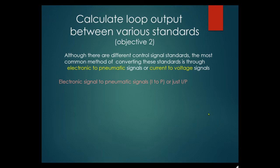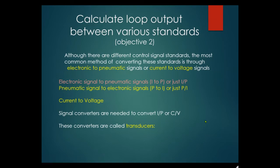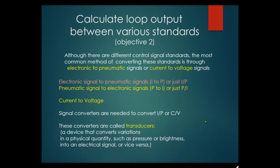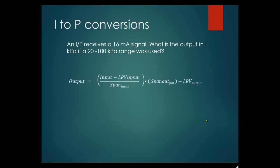Electric signals to pneumatic signals use I-to-P converters. Pneumatic to electric use P-to-I converters. Current-to-voltage signal converters are called transducers — a device that converts physical quantities such as pressure or brightness into electrical signals or vice versa. Example: an I-to-P converter receives a 16 milliamp signal, with an output range of 20 to 100 kPa. Use the input-output formula — easy marks on your exams.